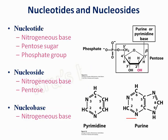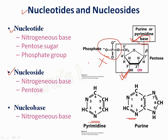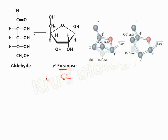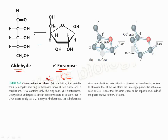Purines contain a two-ring structure and pyrimidines contain a one-ring structure. In the structure of nucleotides, a nitrogenous base, a pentose sugar, and a phosphate group are present. In a nucleoside, there is no phosphate group — it only contains the nitrogenous base and pentose sugar. The sugar ribose is mainly in the beta-furanose form. Furanose means it contains a five-carbon membered ring structure, whereas the pyranose form contains a six-carbon membered ring system. In solution, the aldehyde form and beta-furanose form of free ribose are in equilibrium.